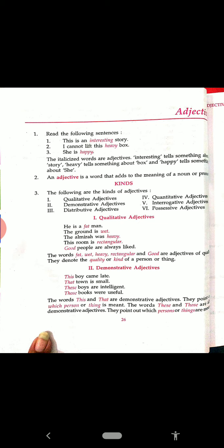Read the following sentences: This is an interesting story. I cannot lift this heavy box. She is happy. Now see the words interesting, heavy, happy — they are telling about the nouns. Interesting is telling about the story, heavy about the box and happy about she. So the words interesting, heavy and happy are adjectives because they are describing the noun and pronoun.